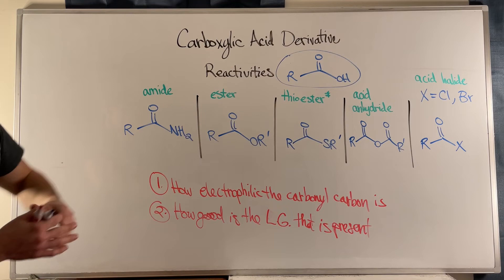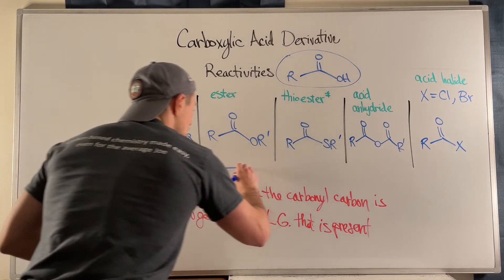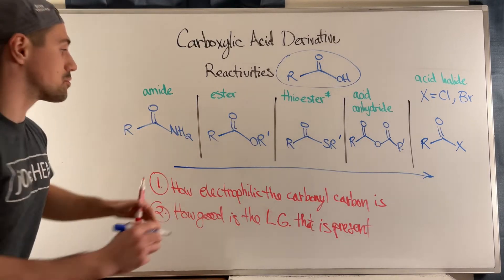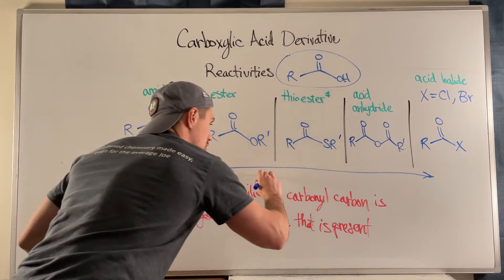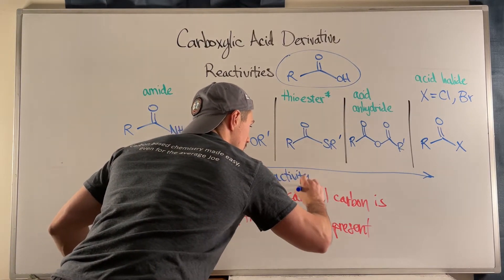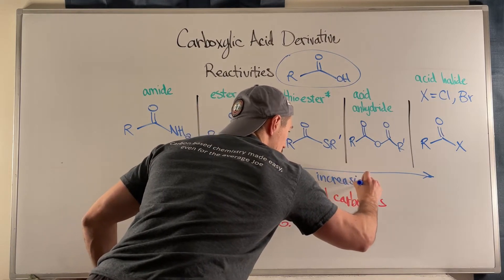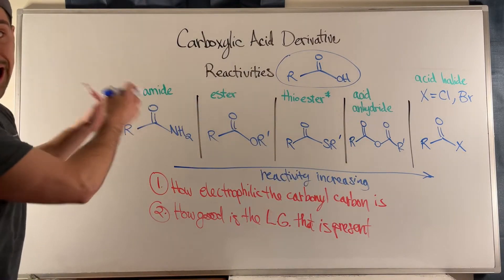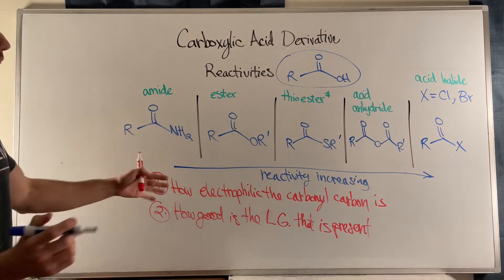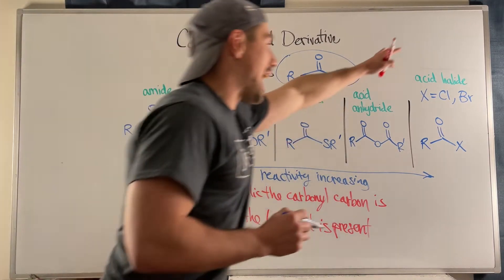So I did this on purpose — reactivity is increasing this way. I'm going to start with the most reactive and work my way back to the amide, which is the least reactive carboxylic acid derivative we have.